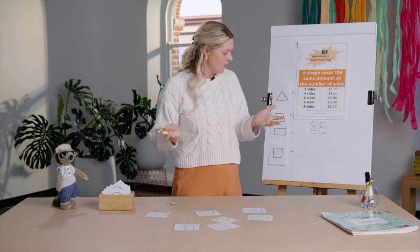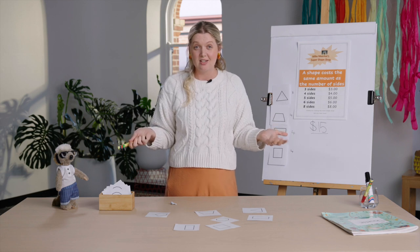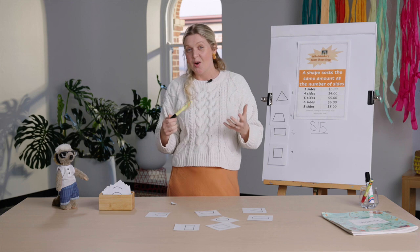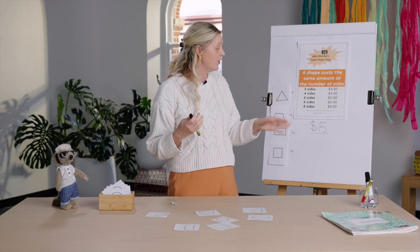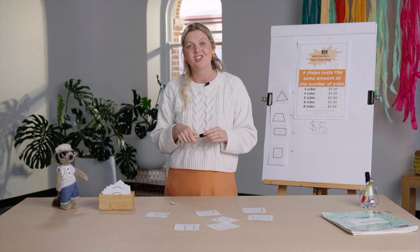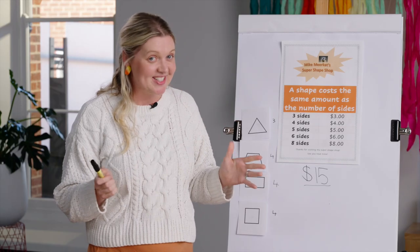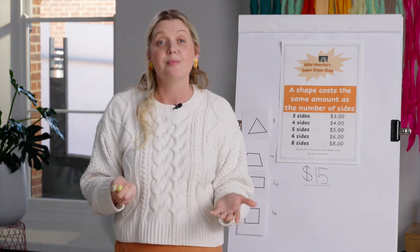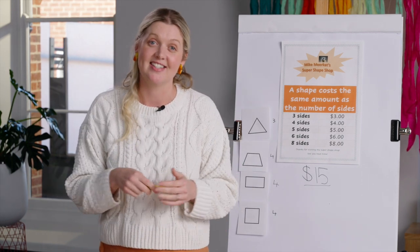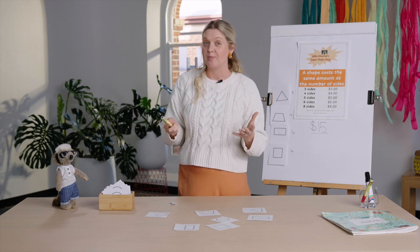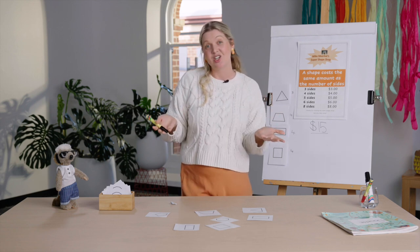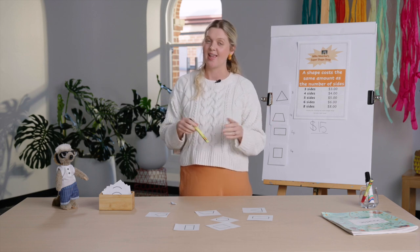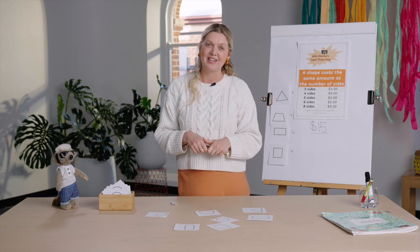Now I'm wondering — is that the only way I could spend fifteen dollars? Could there be other combinations? Your home task is to have a go at exploring all the different ways you could spend fifteen dollars at Mike's Super Shape Shop. Don't forget to record. If you are after a challenge, you might like to have a go at spending thirty dollars at Mike's Super Shape Shop. In this lesson we noticed and described the attributes of two-dimensional shapes. Sides and corners are two of the attributes that help us recognise and name the shapes. Thanks for joining me everybody — I'll see you next time.